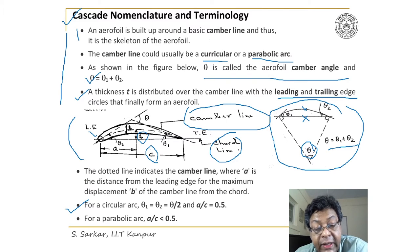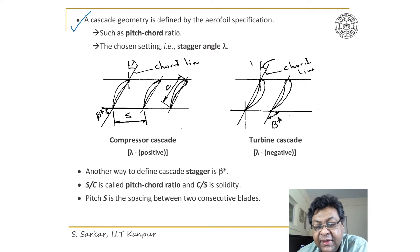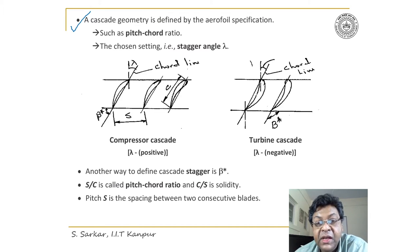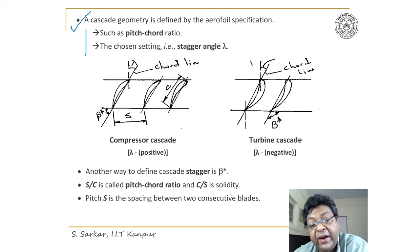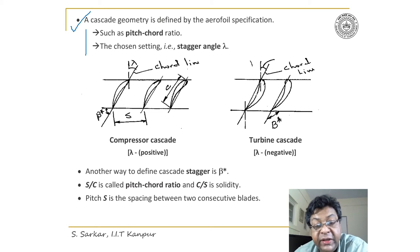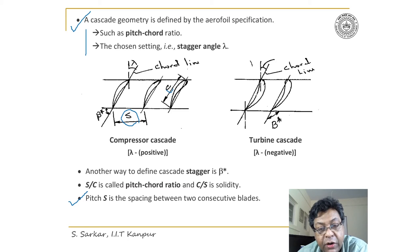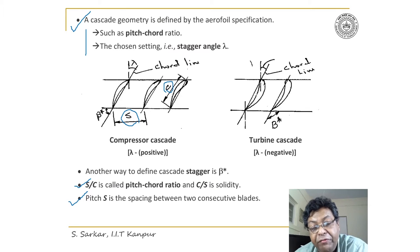After discussion on development of the aerofoil, I'll now discuss cascade geometry. The specification of cascade geometry is the pitch-chord ratio and stagger angle. The stagger angle is the setting of the blade, and pitch is the spacing between two consecutive blades. S is the pitch and C is the chord, so pitch-chord ratio is defined by the parameter S/C, while C/S is often referred to as solidity.